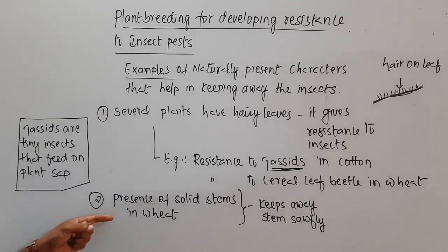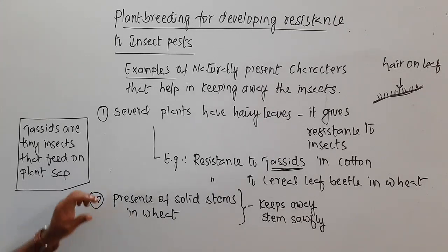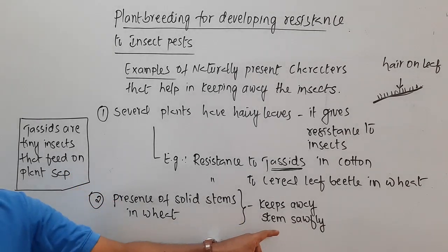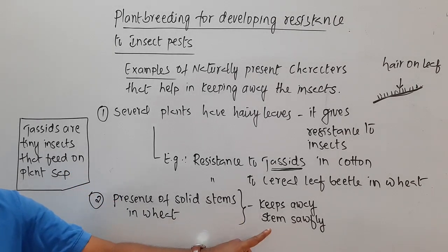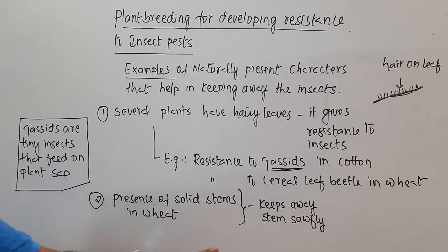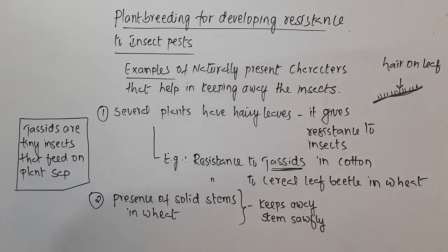The second feature is the presence of solid stems, as in the case of wheat. If the stems are solid, they will not attract the stem sawfly. The stem sawfly usually prefers a hollow stem, so if the stem is solid, it will not be attracted.